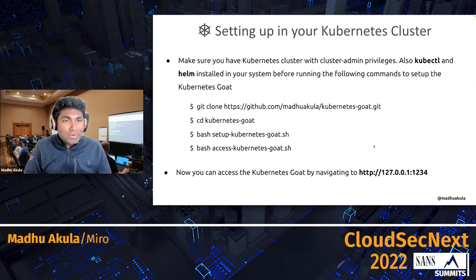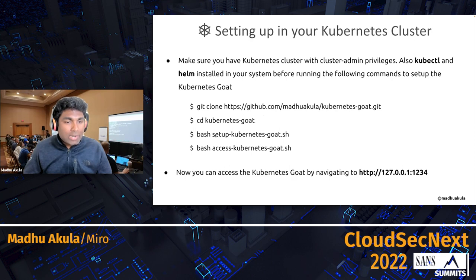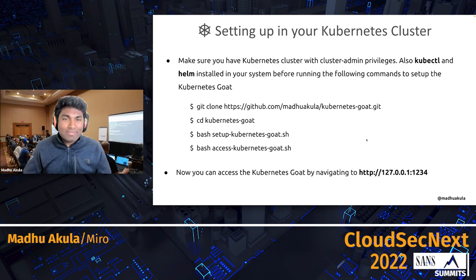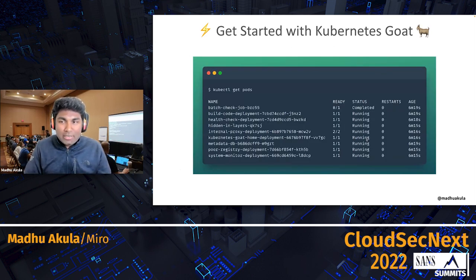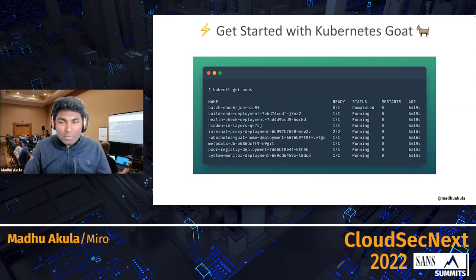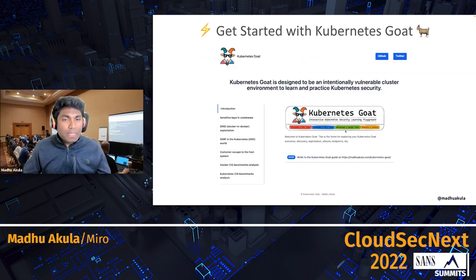If you want to leverage more potential and understand what's happening in depth, and set up in your own Kubernetes cluster, it's as simple as downloading the Kubernetes Goat repository and running the setup script, then accessing it from the endpoint. Please feel free to look at the scripts and code base — it's completely open source and available in the GitHub repository. Once set up, you should be able to see what's running in Kubernetes Goat by running `kubectl get pods`. If everything is in a running or completed state, you're good to go.